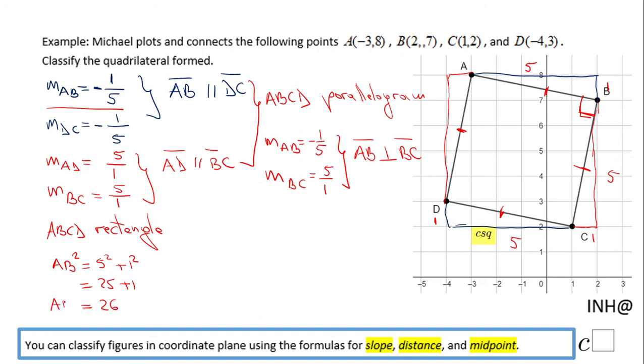AB squared is 26, which means AB is square root of 26. And if you use the same math, you will notice AB is congruent with BC and all the others.